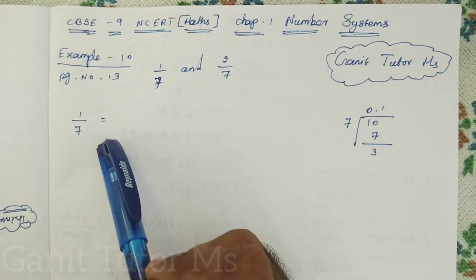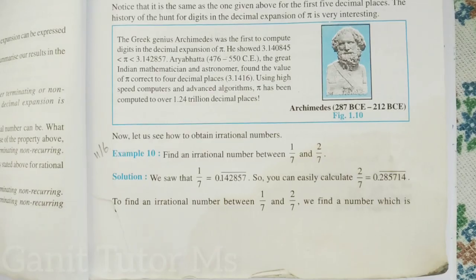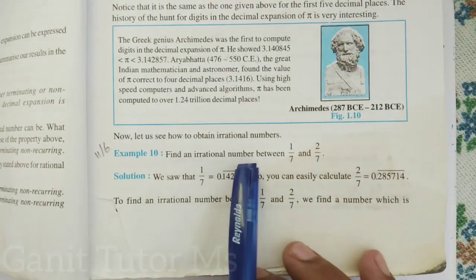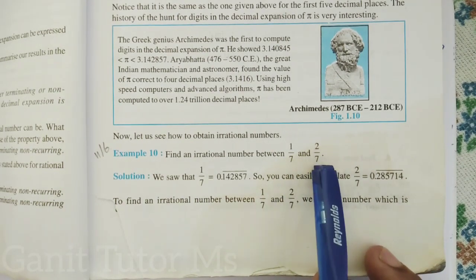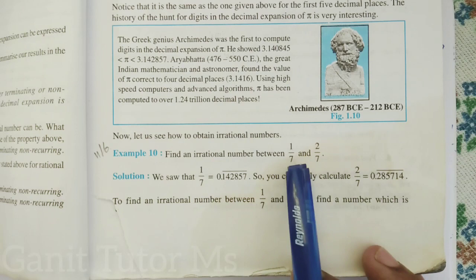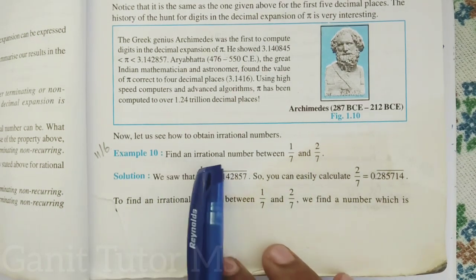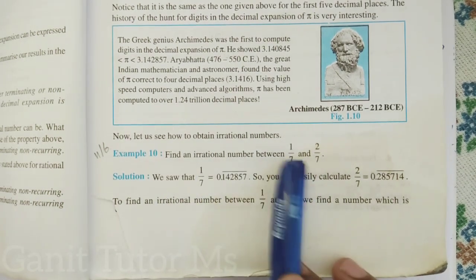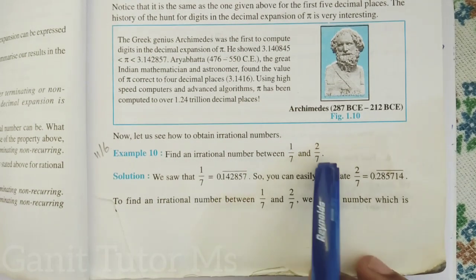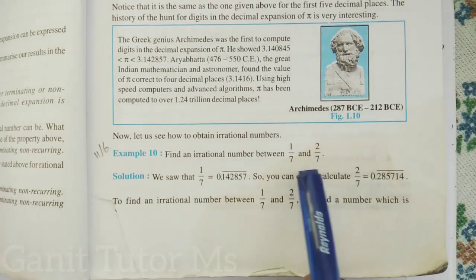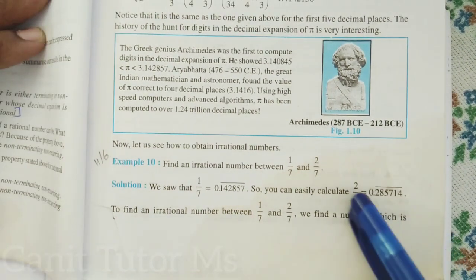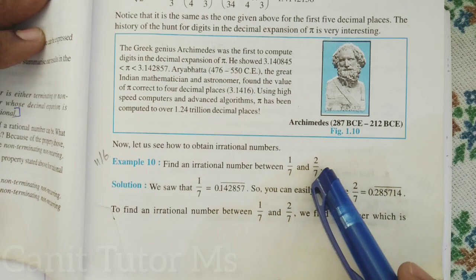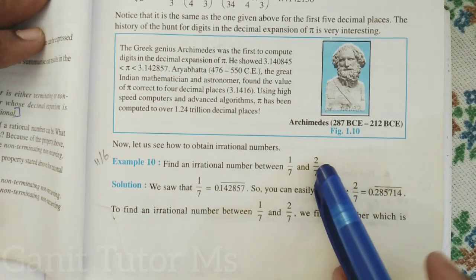Actually, what they given in this problem - find an irrational number between 1 by 7 and 2 by 7. They are given two numbers. Between these two numbers, we should find out the irrational number. They are asking only one number. Now it is in a p by q form, so it is rational. So between these two rational numbers, we should find out only one irrational number.